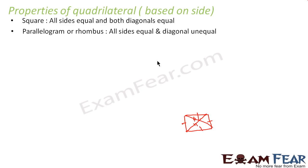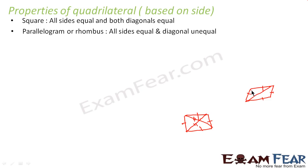If sides are equal and diagonals are not equal, they are either parallelogram or rhombus. In one parallelogram, the sides are equal and the diagonals are unequal. Also, in case of rhombus, all the sides are equal but diagonals are unequal.